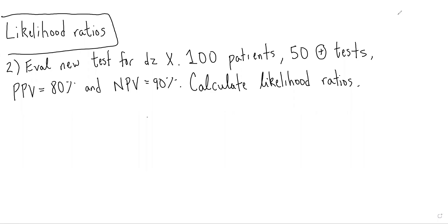In this case, we're evaluating a new test for disease X. We have a sample of 100 patients with 50 positive tests. PPV is 80% and NPV is 90%, and we're asked to calculate the likelihood ratios.